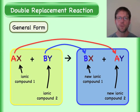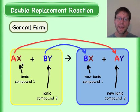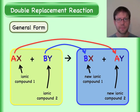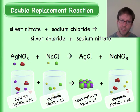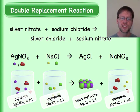Here's the general form — this would be the cation, this is the anion, here's the other cation, the other anion — and what's going to happen is there's a switching. Where B was with Y, now B is with X, and the reverse is true over here as well. Here is a nice example: silver nitrate plus sodium chloride.